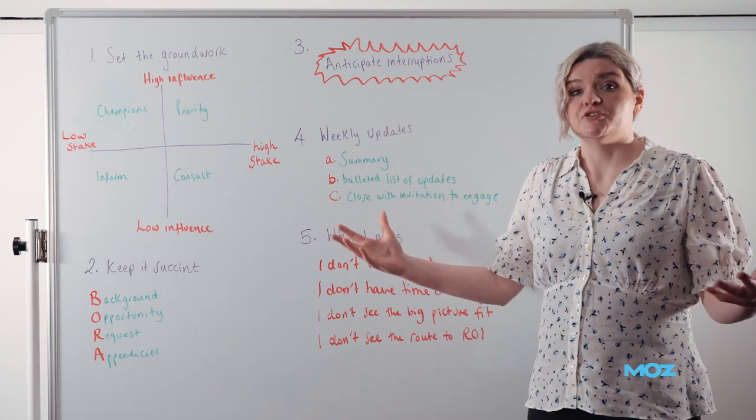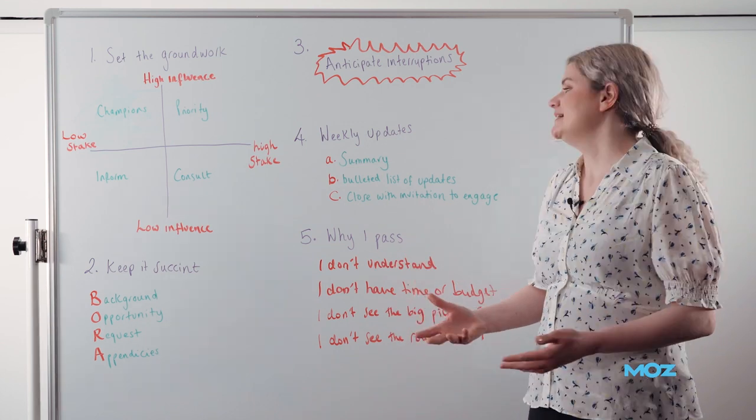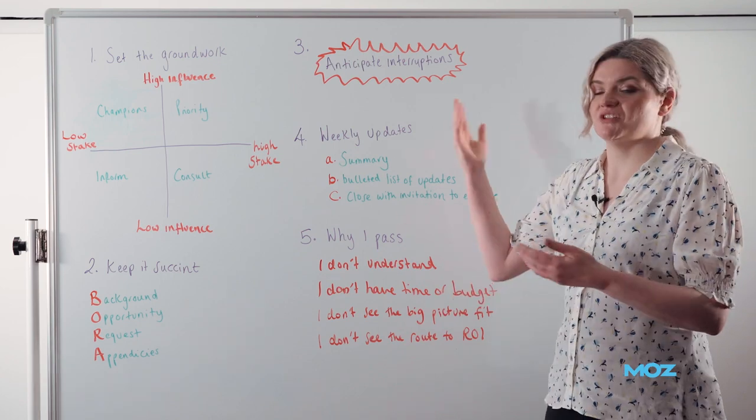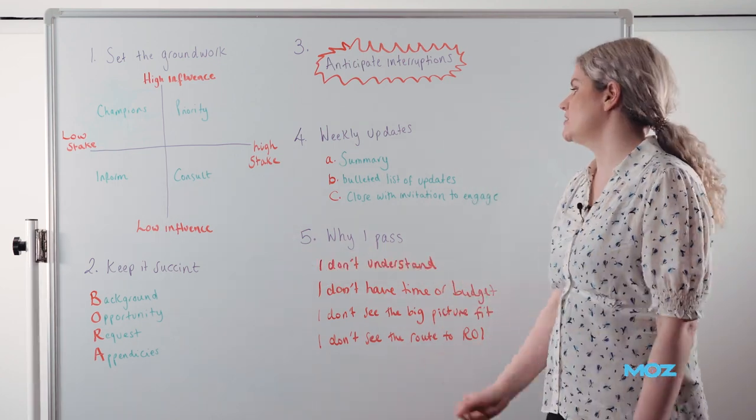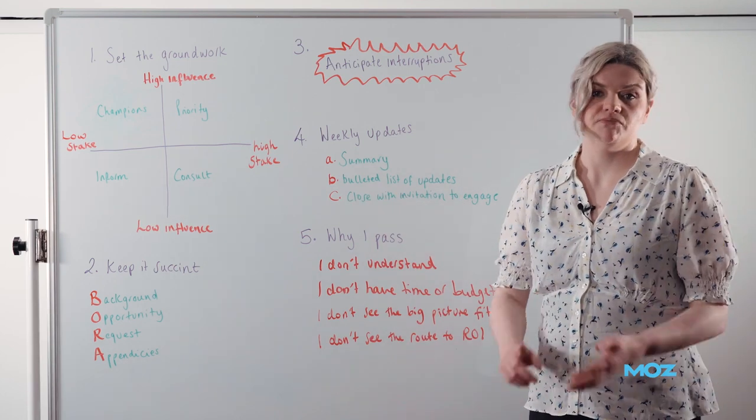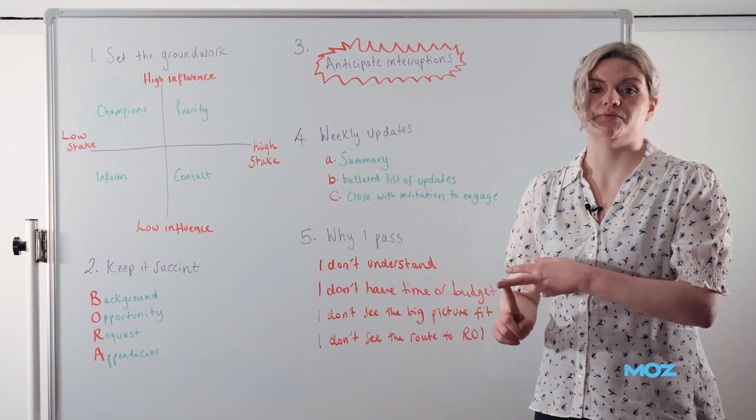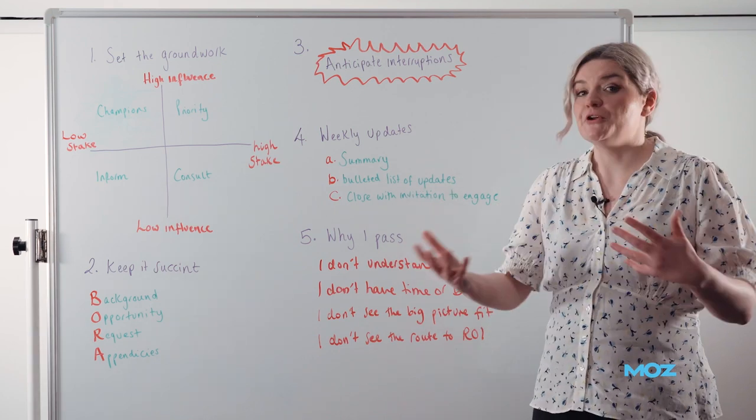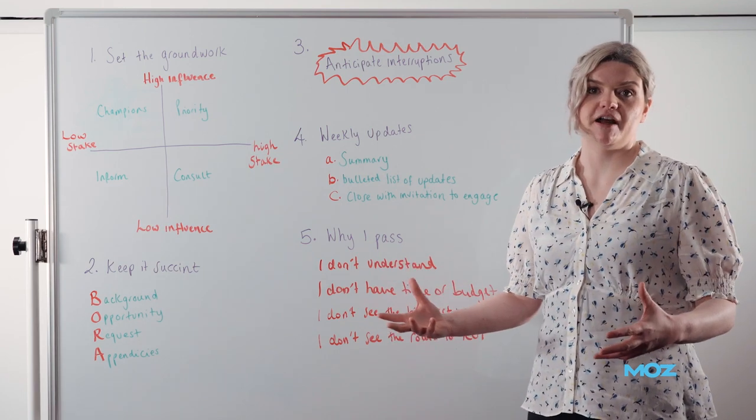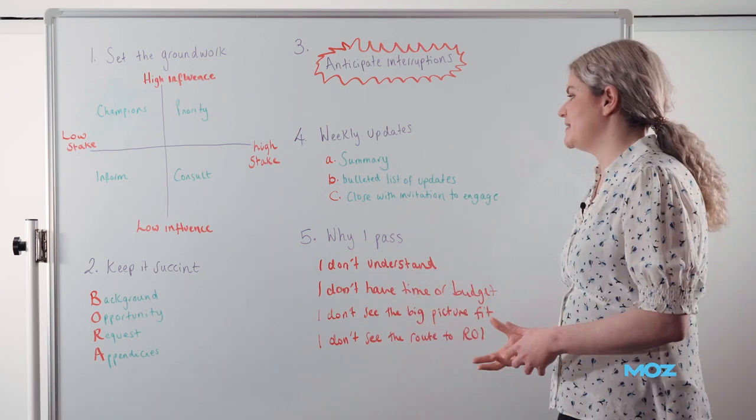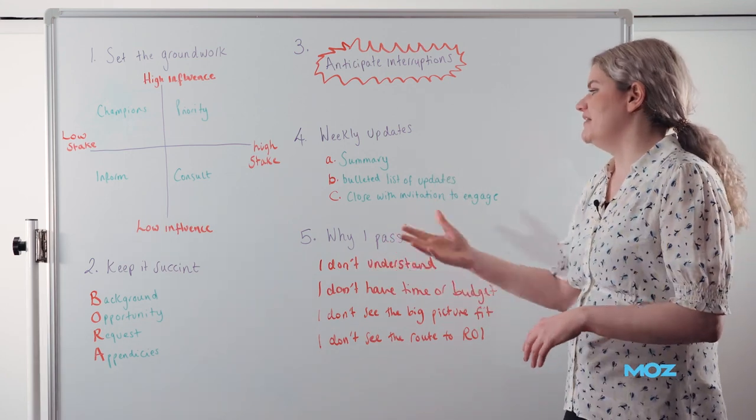It can be as simple as a summary of what's happened this week, setting the background, then a bulleted list of updates—what we've done, results we've achieved, things we've launched. If you don't have loads that you've launched, it could just be what the team has been doing and what they've enjoyed working on. It doesn't have to be really in-depth or anything scary.